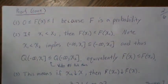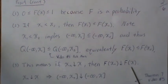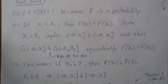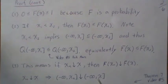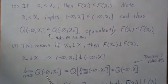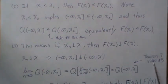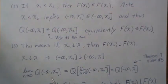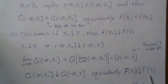To show right continuity: if xn decreases to x, then F of xn decreases to F of x. If xn decreases to x, these intervals decrease to the corresponding set. Taking the limit as n goes to infinity, because these are decreasing sets, we can pass the limit inside the probability. The limit of the interval is this set, from theorem seven of video five. So the limit equals F of x, confirming right continuity.